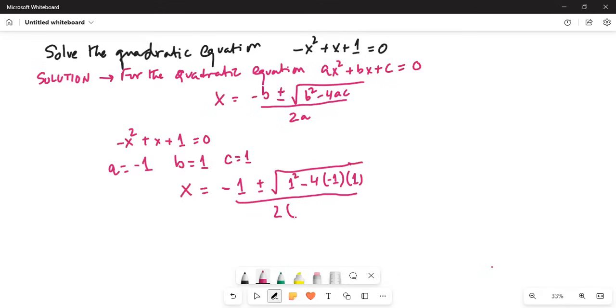So then x equals minus 1 plus or minus square root of 1 squared. And 4 times minus 1 is minus 4; minus 4 with a minus in front becomes plus 4, divided by minus 2.